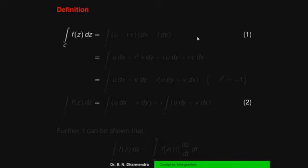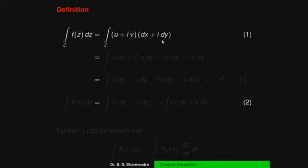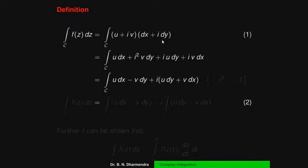The integral over the curve C of f(z)dz — where f(z) is u + iv, a complex function — and dz can be written as dx + i·dy, because z = x + iy and taking the derivative gives dz = dx + i·dy. When we take this multiplication and also separate the real and imaginary parts, noting that i² = −1.